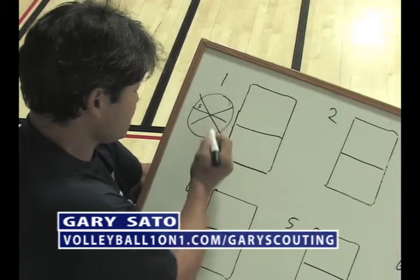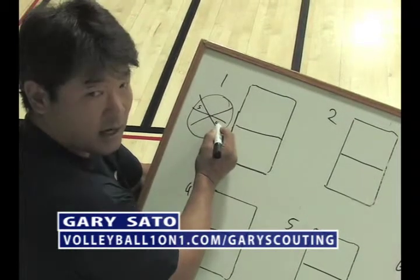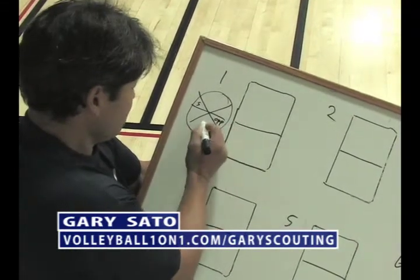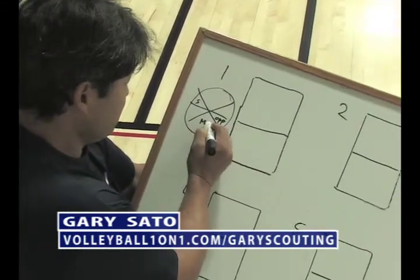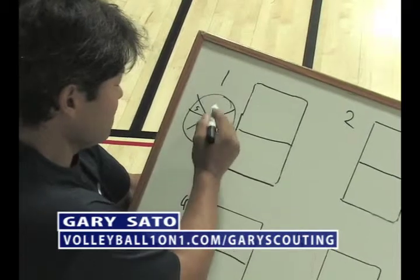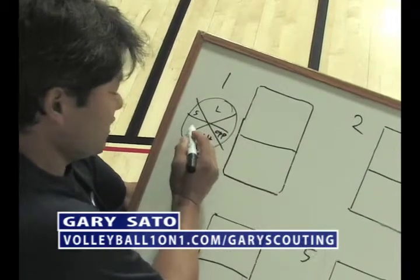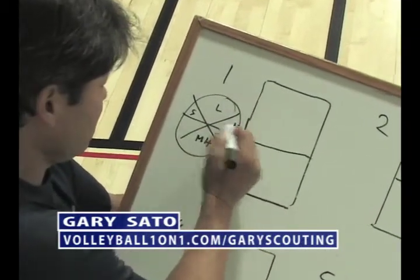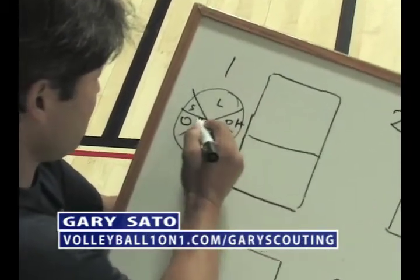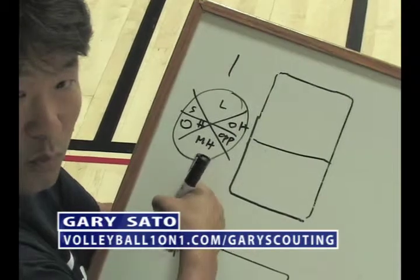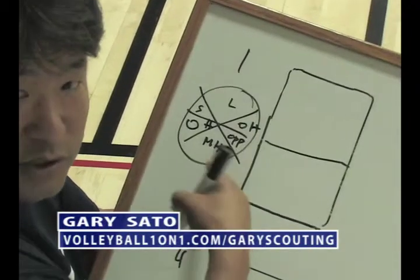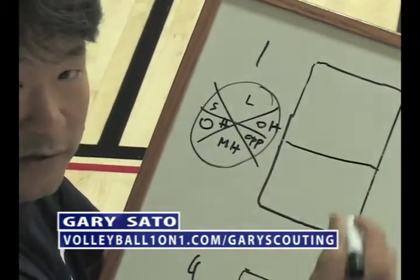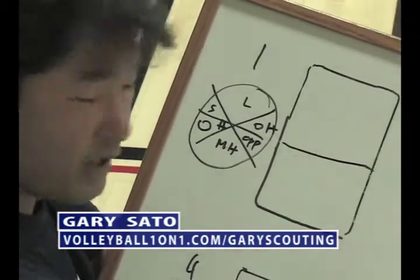You get the setter, the opposite, middle hitter, libero, outside hitter, outside hitter. Once I have their numbers in, I'll put them on this court, so depending on where they start.